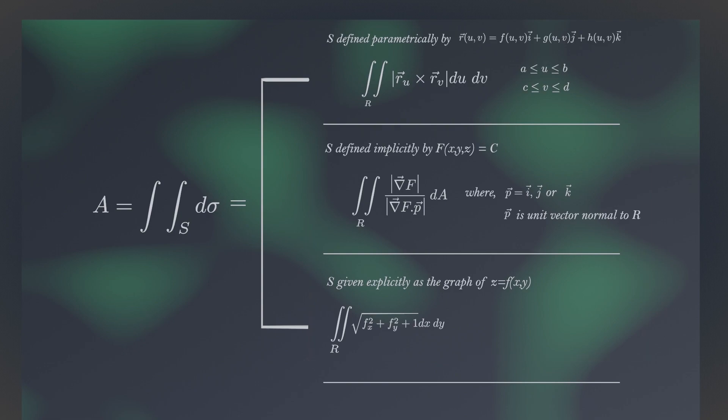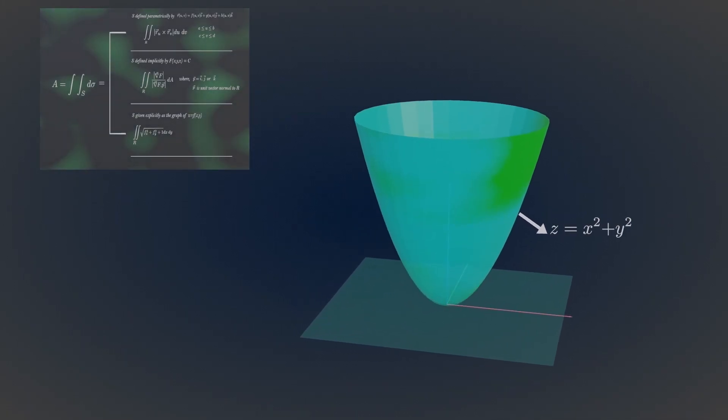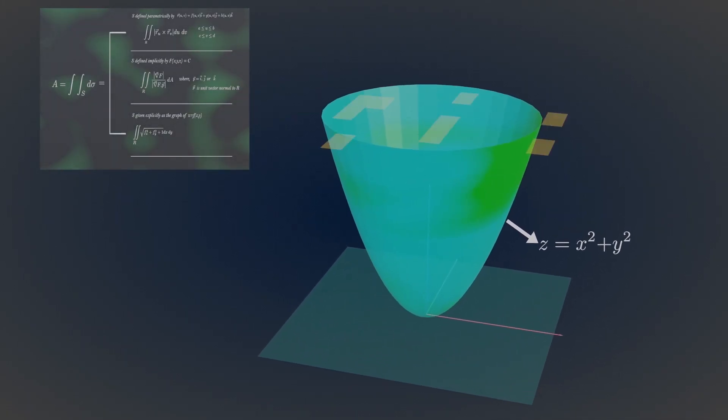Now let's understand how to use these three formulas. Let's use these tools on finding the surface area of this paraboloid, which is cut by a plane Z equals 4 in space.